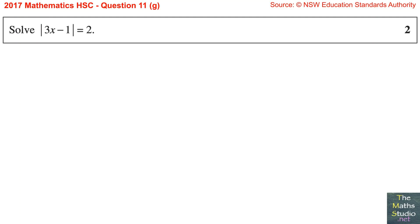Question 11, Part G. Solve the absolute value of 3x minus 1 equals 2.